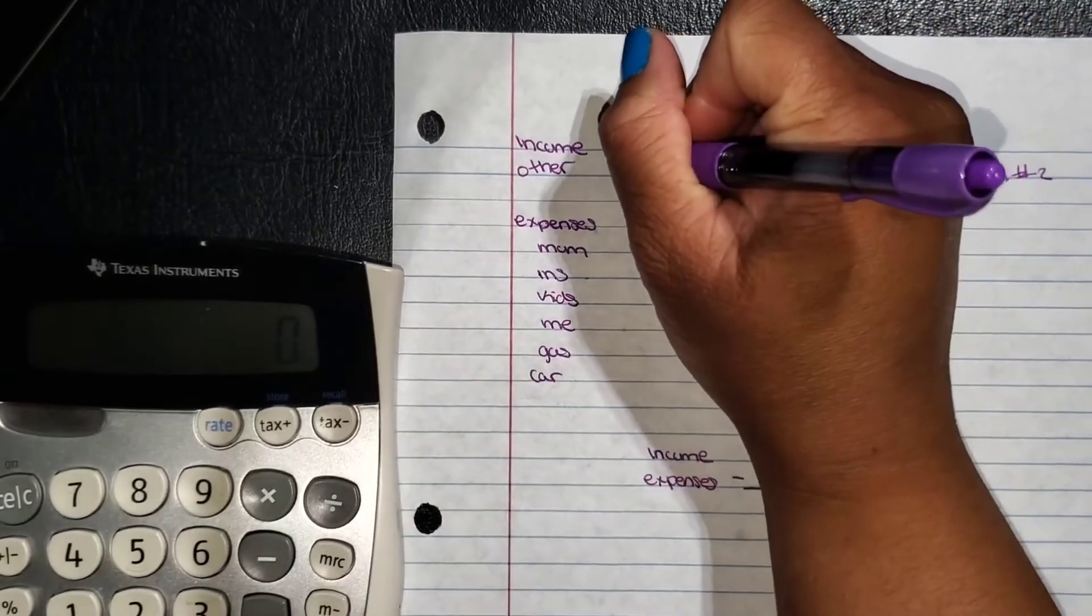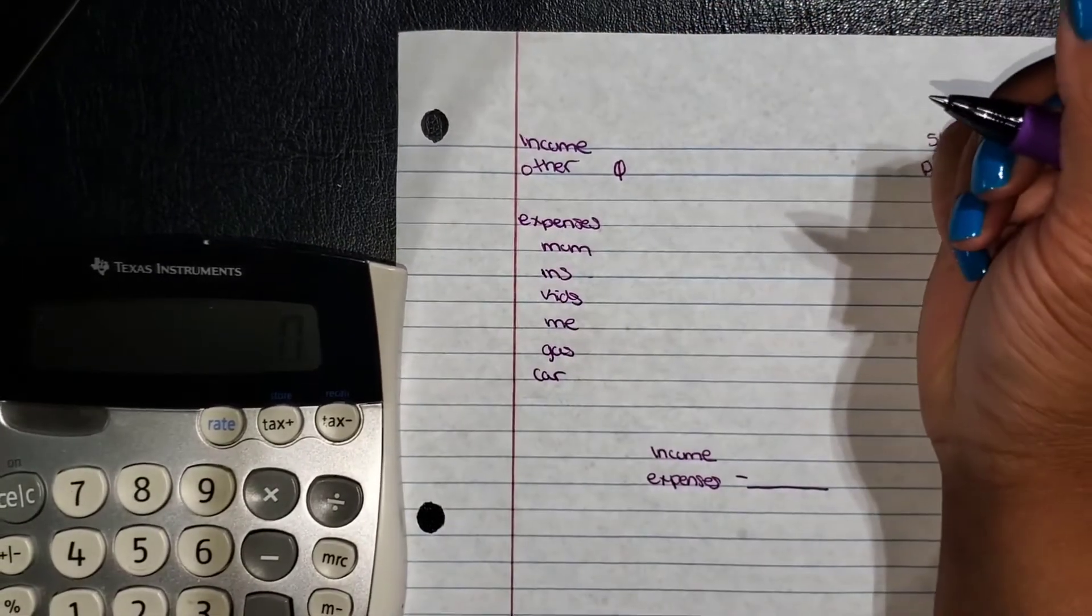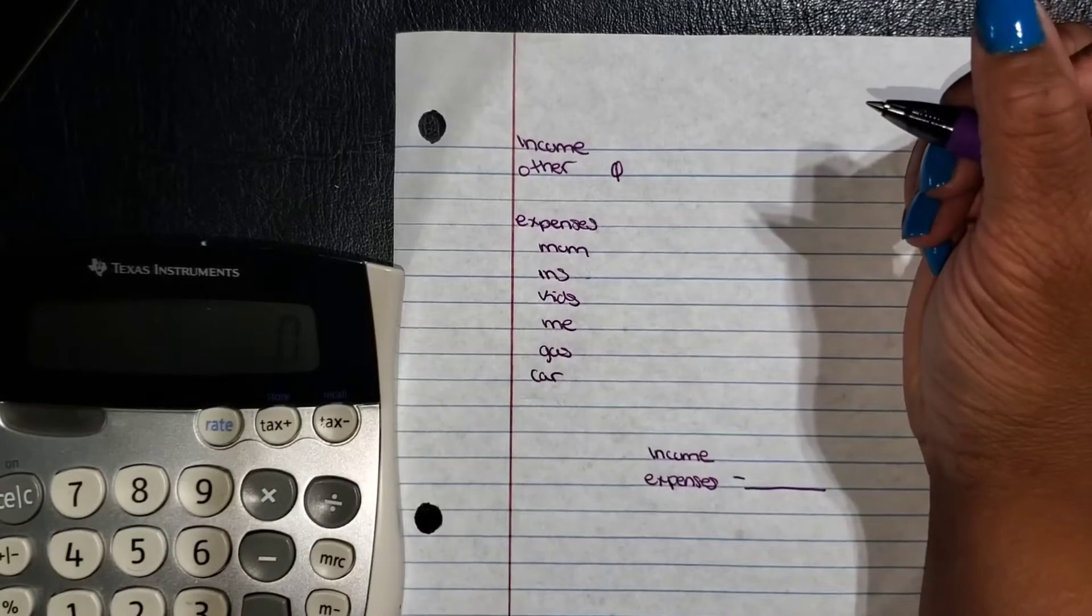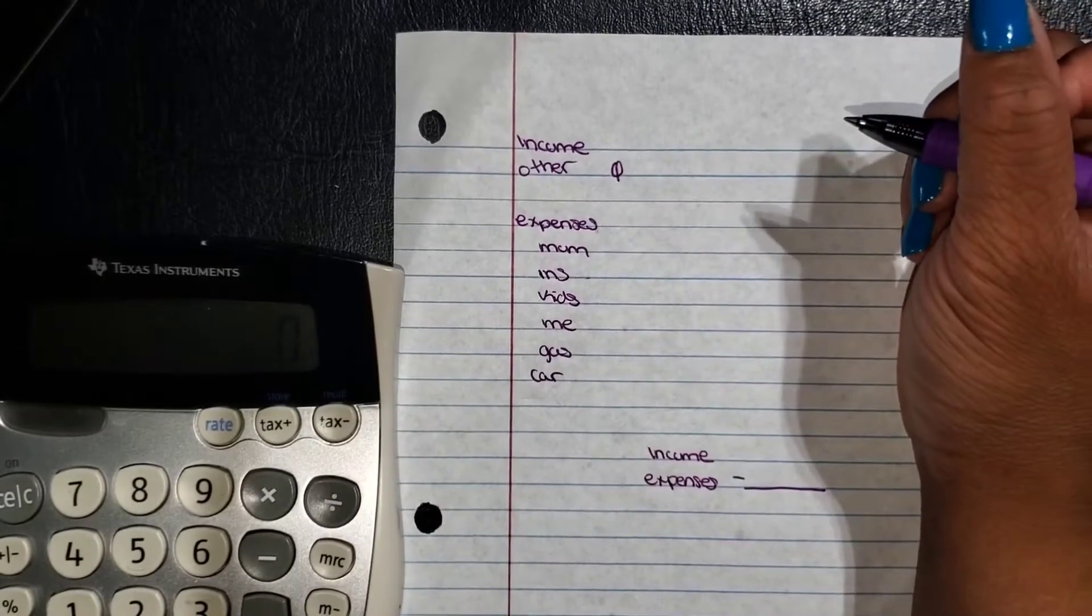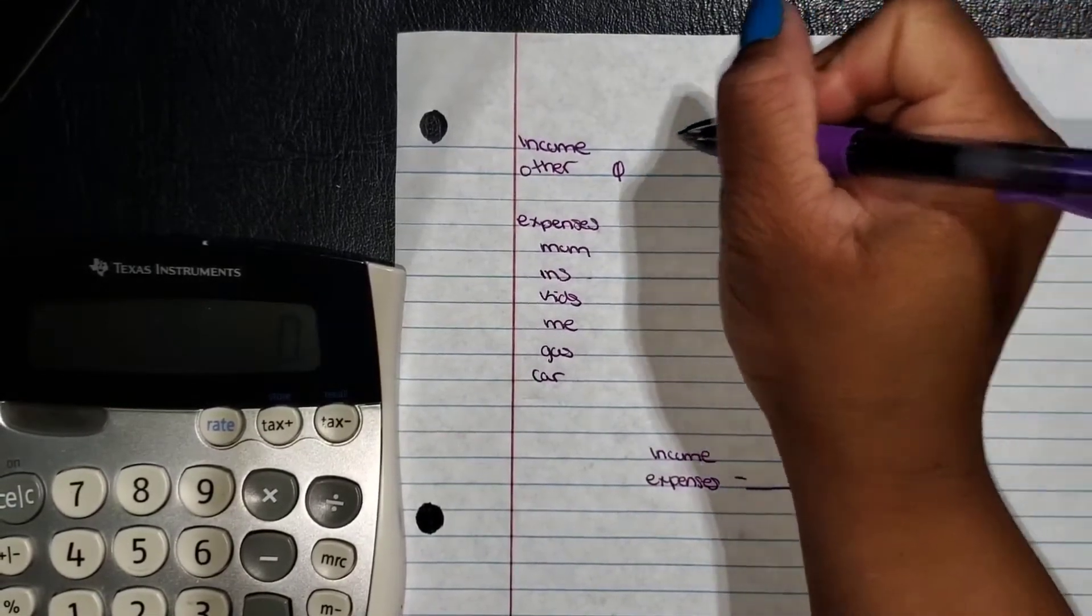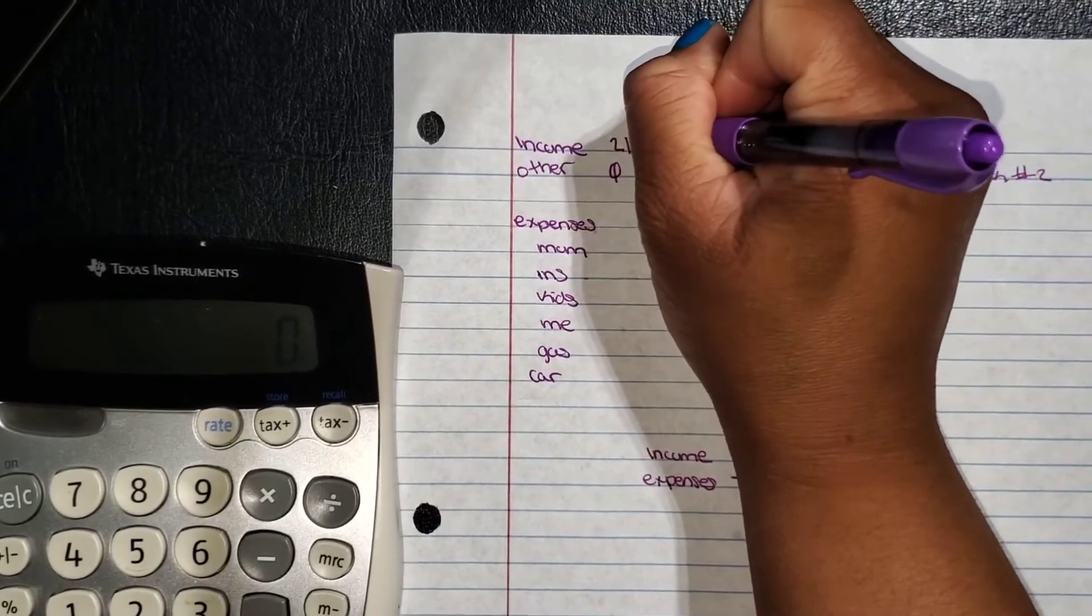For income, I do not have any other income. This is where I include child support or any extra income I receive throughout the month. And so my income is going to be $2,173.